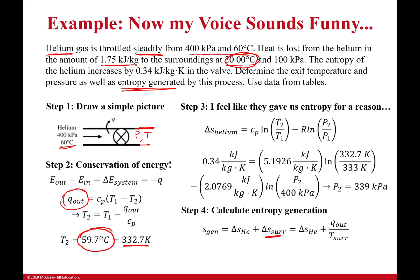The entropy change of my helium gas was given in the problem statement. I plug in my numbers and get that my total entropy generation is 0.346 kJ/kg·K. Most of that was made in the throttling valve, with a little bit coming from the heat output.